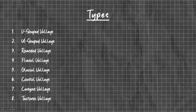So what are the types of valleys? First, V-shaped valley. Second, U-shaped valley. Third, rounded valleys. Fourth, fluvial valleys. Fifth, glacial valleys. Sixth, coastal valleys. Seventh, canyon valleys. Eighth, tectonic valleys.